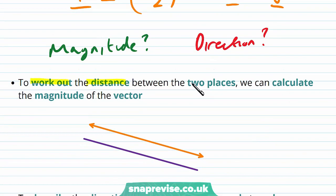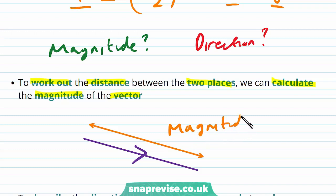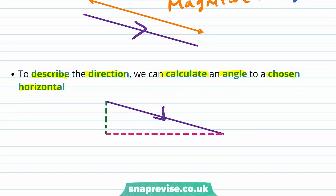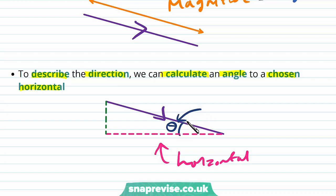To work out the distance between the two places, we can calculate the magnitude of the vector. Given a certain vector, the magnitude of the vector is equal to the length of that vector from its start point to its end point. And in order to describe the direction, we can calculate an angle to a chosen horizontal. The angle theta between the vector and the horizontal is a nice way to describe the direction of the vector.